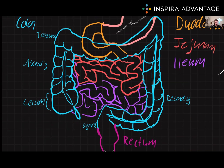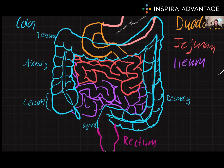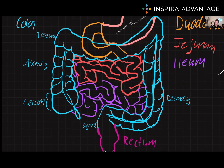The colon is the longest part of the large intestine and is divided into four regions: the ascending colon, the transverse colon, the descending colon, and the sigmoid colon. The ascending colon is a continuation of the cecum and runs upward on the right side of the abdomen. The transverse colon runs horizontally across the upper abdomen, and the descending colon runs downward on the left side. The sigmoid colon is S-shaped and leads to the rectum.